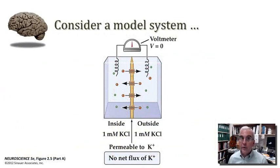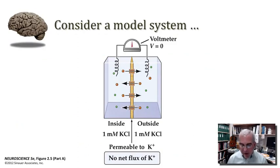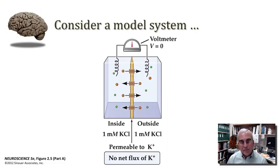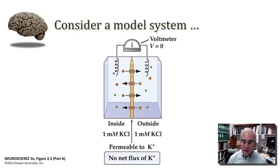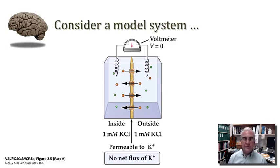In order to understand the significance of ions passing across a permeable membrane, let's consider a simple model system. We have a semi-permeable membrane dividing a container into two compartments, with ion channels that allow for the passage of potassium ions. We fill the container with a 1 millimolar potassium chloride solution with the membrane running down the middle. Under these conditions, potassium ions are free to pass from one side to the other, and there is no net flux of potassium — just as much potassium goes to one side as back to the other.